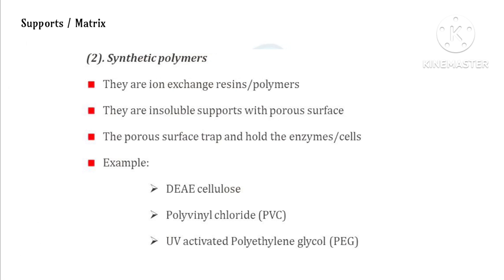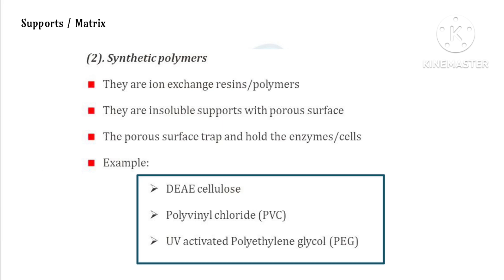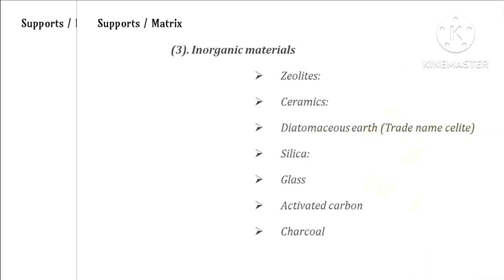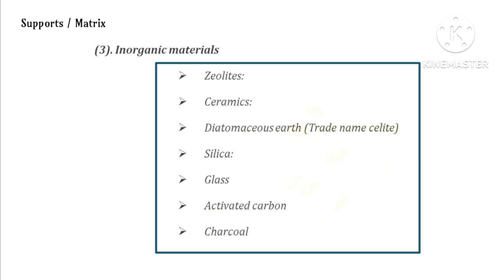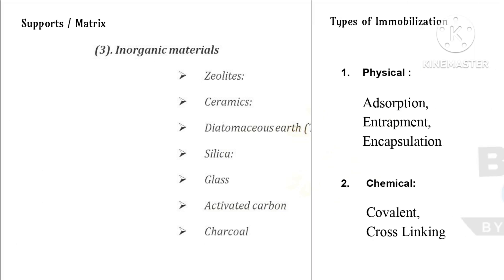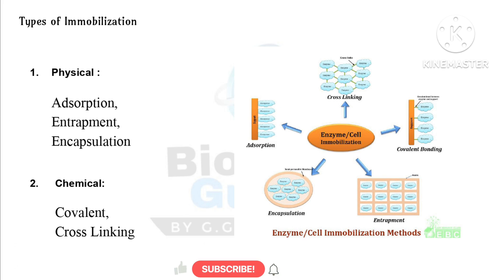Second, synthetic polymers — these are ion exchange resins or polymers. Examples include DEAE (diethylaminoethyl), also used in ion exchange chromatography, DEAE-cellulose, polyvinyl chloride, and UV-activated polyethylene glycol. Third, inorganic materials — zeolite, ceramics, diatomaceous earth, silica, glass, activated carbon, and charcoal are the inorganic material support matrices.